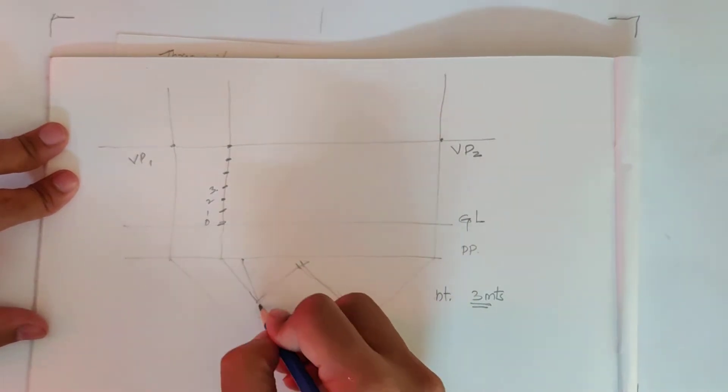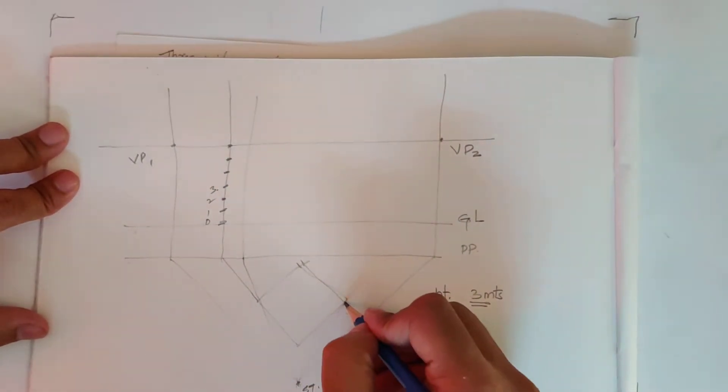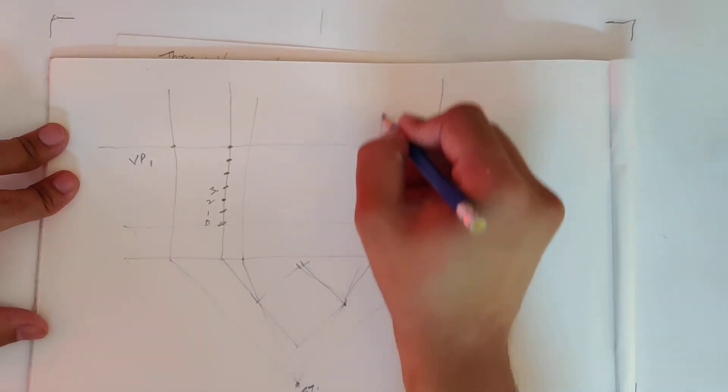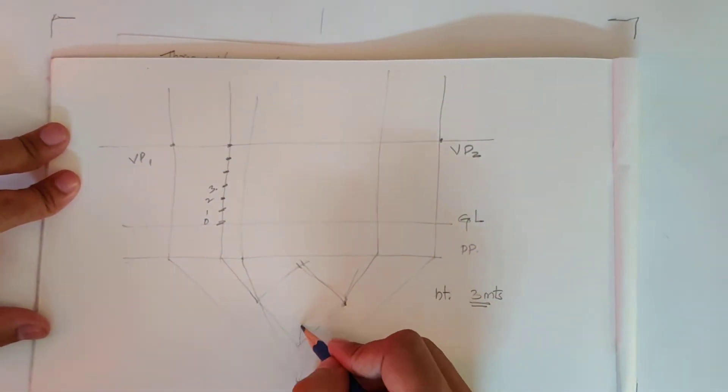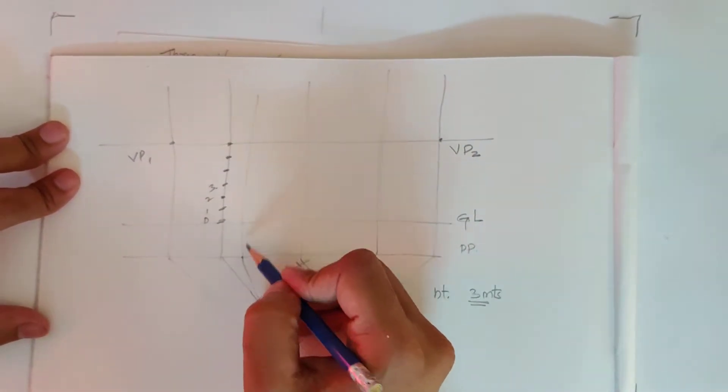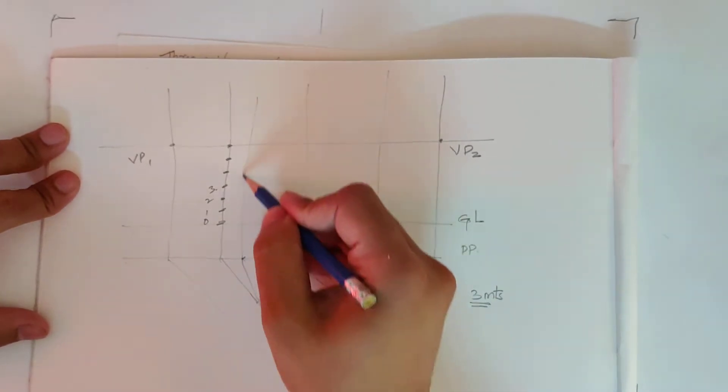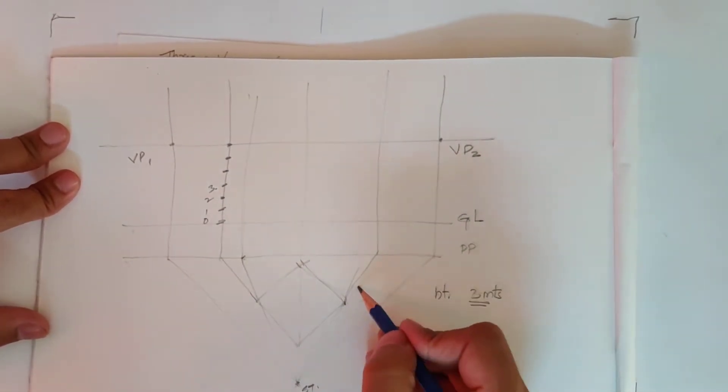We will project this side, go up. We will project this side, it will go up. So we have only two, three sides. Third one is this one. So we have this side projected upwards, and this side projected upwards.